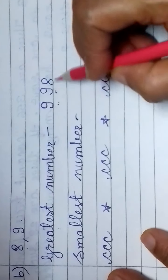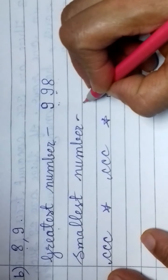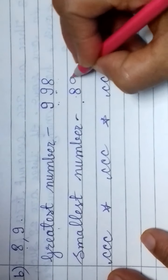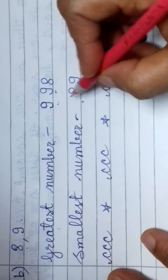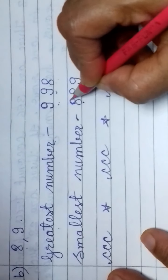So we have 9, 9, 8, the greatest number. For smallest number, we arrange them in ascending order. First we write the smallest digit, then we write the greatest digit. We repeat smallest digit in the front.